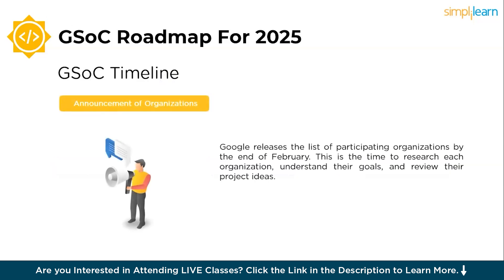The first stage is the announcement of organizations, which happens at the end of February. Google releases the list of participating organizations by the end of February. This is the time to research each organization, understand their goals, and review their project ideas. Reaching out to mentors during this phase can help clarify expectations and refine your approach.